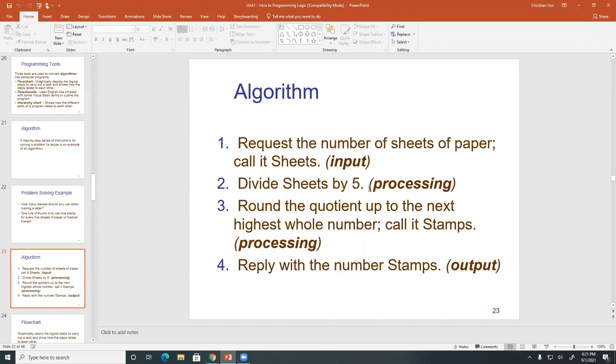So, you know, one divided by five, you have less than five. So you still need one stamp, right? And just, you know, round up to the next highest number and so on. So this is the processing part two and three.